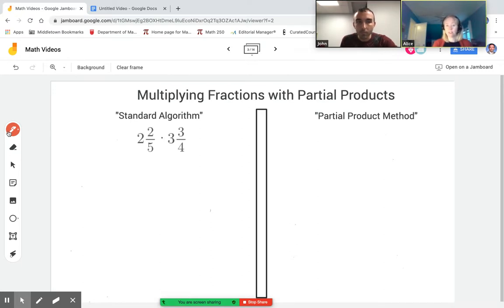So first I'm going to show you how I learned it when I was in elementary school. I would turn this into an improper fraction. So I would say 5 times 2 is 10 plus 2 is 12 and the denominator would stay 5. Then I say 4 times 3 is 12 plus 3 is 15. So I get 15 over 4.